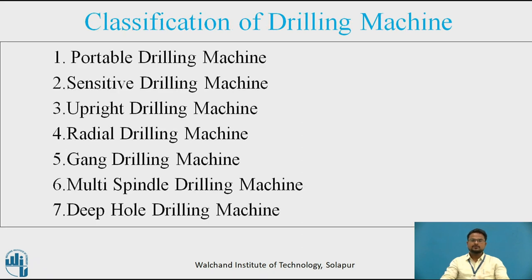Coming to the classification of drilling machines. Drilling machines can be classified as follows: portable drilling machine, sensitive drilling machine, upright drilling machine, radial drilling machine, gang drilling machine, multiple drilling machine, and deep hole drilling machines. We will discuss each one by one.